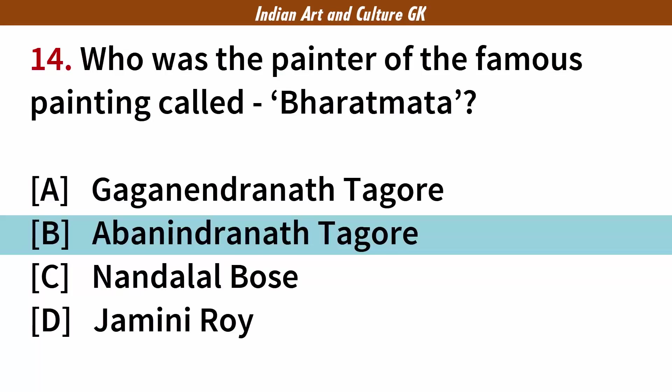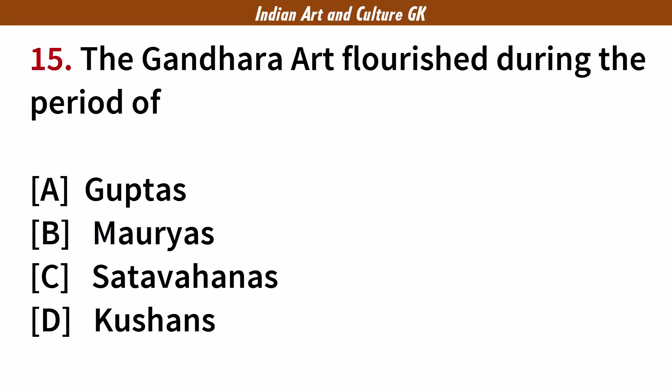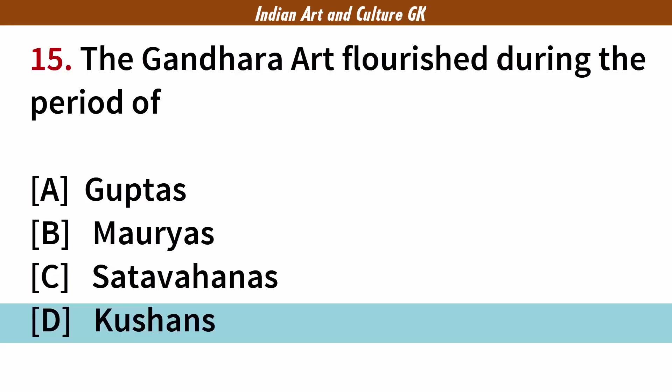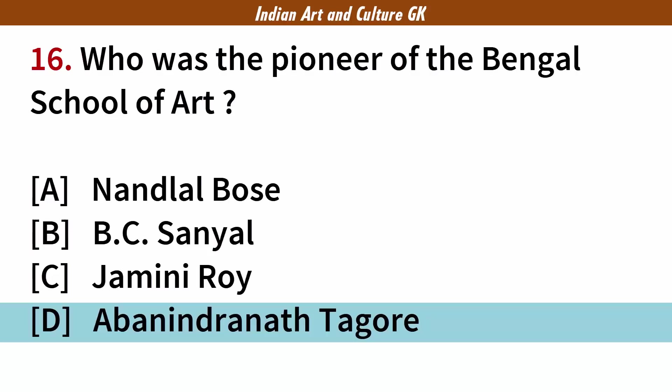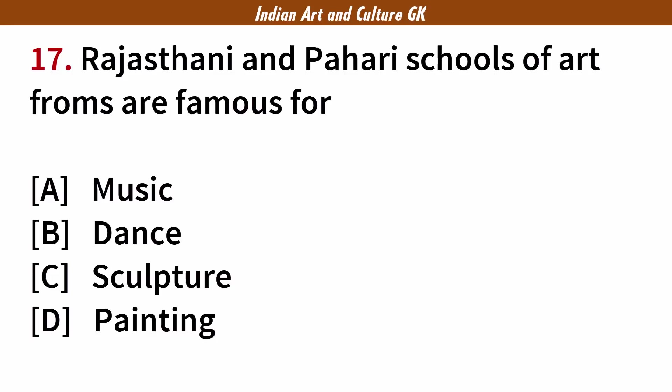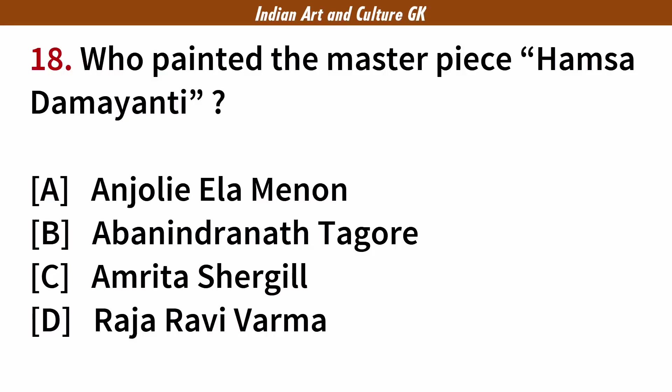The Gandhara art flourished during the period of? Answer: D. Kushans. Who was the pioneer of the Bengal School of Art? Answer: D. Avanindranath Tagore. Rajasthani and Pahari schools of art forms are famous for? Answer: D. Painting. Who painted the masterpiece Hamsa Damayanthi? Answer: D. Raja Ravi Verma.